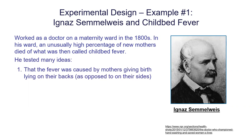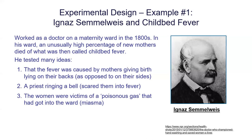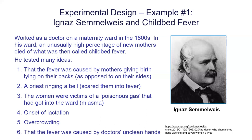He tested things like: was this fever caused by women laying on their sides instead of their backs? There was a church on the street with a bell ringing, and the thought was maybe these women were fearful of their mortality and being scared into a fever. Were they victims of poisonous gas that had gotten into the ward? This was actually a popular theory at the time — miasma, or bad smells, were the cause of illnesses. On the side of diet, overcrowding — and it turns out that last one he eventually tested was the true answer.